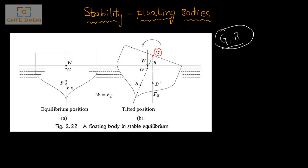If M is above G, it is definitely a stable condition. If M is below G, it is an unstable condition. From the diagram, if M is above G, the weight and buoyancy force produce an anti-clockwise couple which cancels the clockwise tilt, restoring the body to equilibrium.